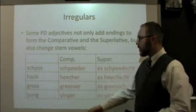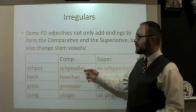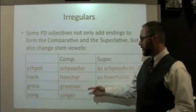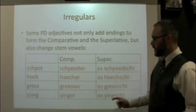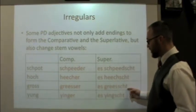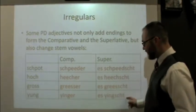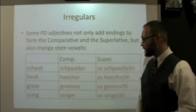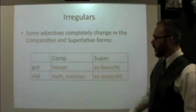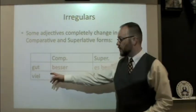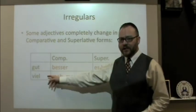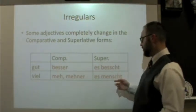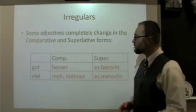Here are a few more irregulars. Spod, meaning late, changes to später, then to es spächt. Hoch, meaning high, becomes hecha, then es hecht. Groß, meaning big, becomes gräser, then es gräischt. And jung becomes jinger, then es jingcht. Again, you just have to memorize these. And two more that are also irregular in English: gut (good) changes to besser, then es best. And feel changes to either may or manor depending on context, and es mängcht.